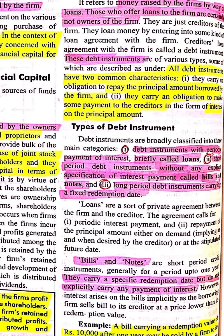Doosra hai bills and notes. Bills and notes are short period credit instruments, generally for a period up to one year. They carry a specific redemption date but do not explicitly carry any payment of interest. Yahaan par interest amount specifically decide nahi hota hai, lekin jo principal amount hai wo redemption date par pay kiya jaata hai. Interest zaroor kiya jaata hai lekin uske baare mein itna explicitly clear nahi hota.